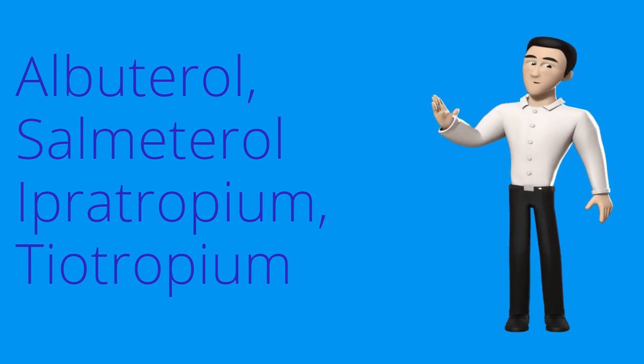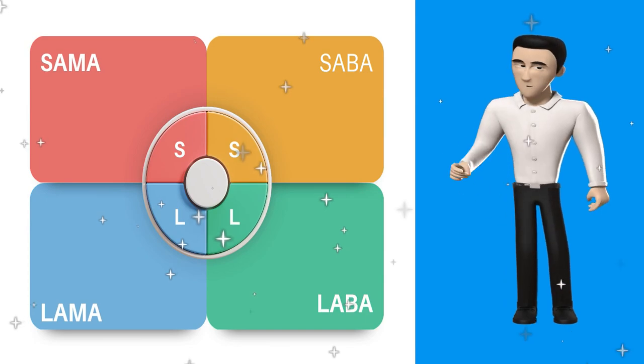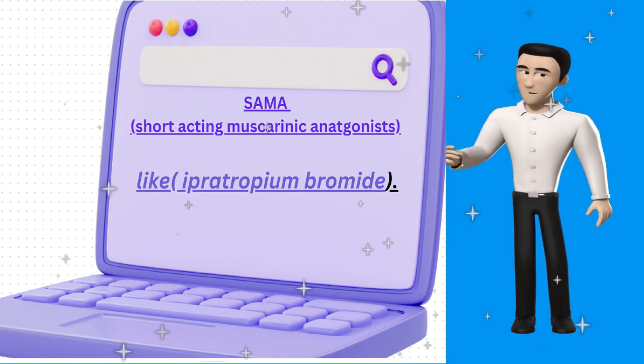For simplification we can use the following mnemonic: SAMA, SABA, LAMA, LABA. SAMA stands for short-acting muscarinic antagonists like ipratropium bromide.